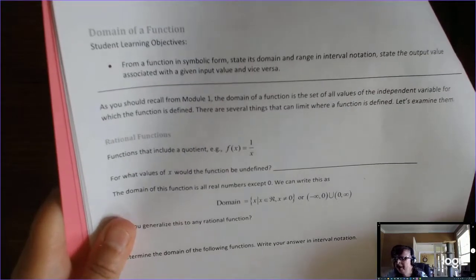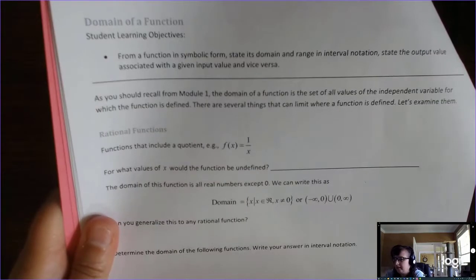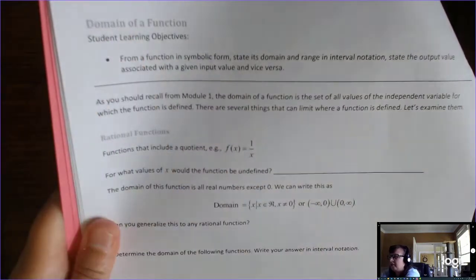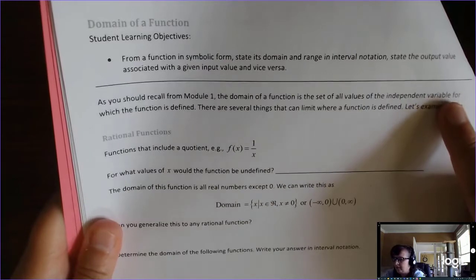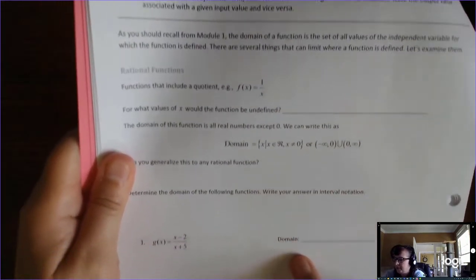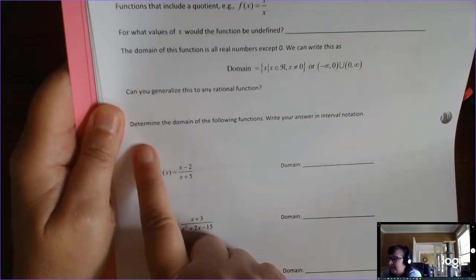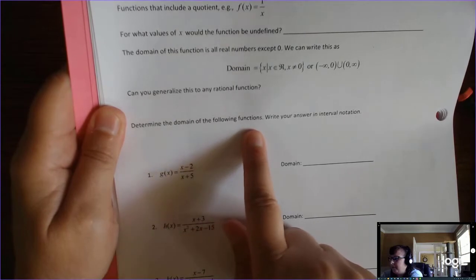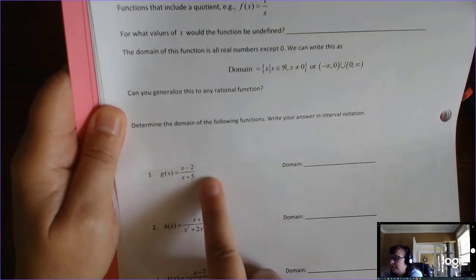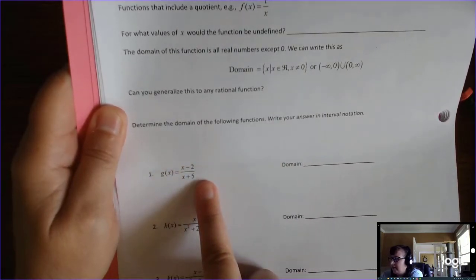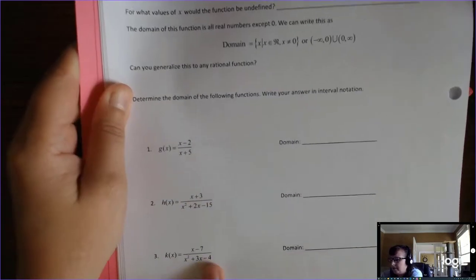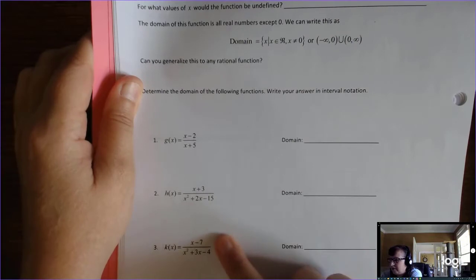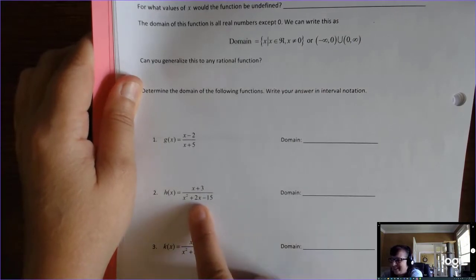So in the lab manual, on page 30, at least this edition, just look for the table of contents for domain of a function. It reviews everything we just talked about, and then you've got some examples. It says determine the domain of the following functions. Write your answer in interval notation, and notice that all three of these are rational functions, but these last two are quadratics in the denominator.